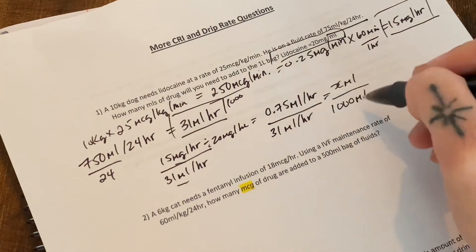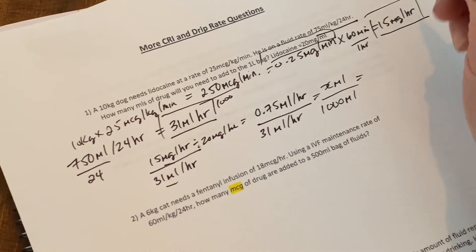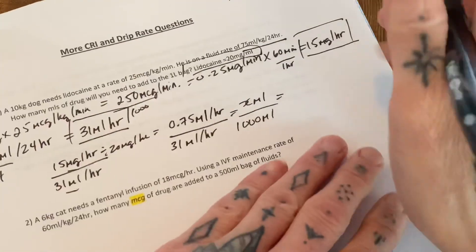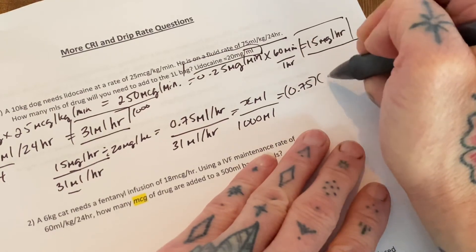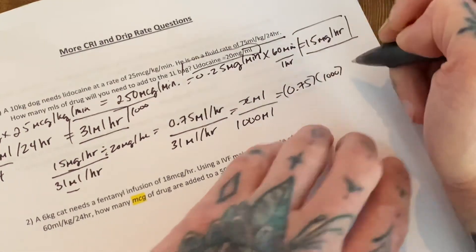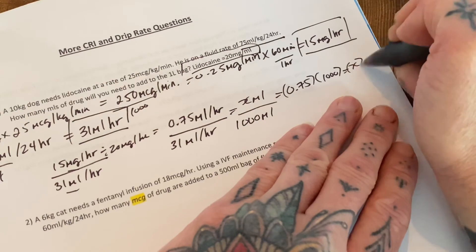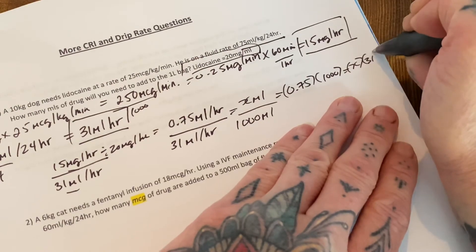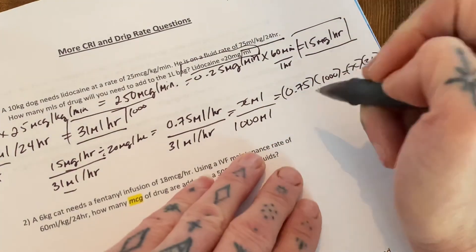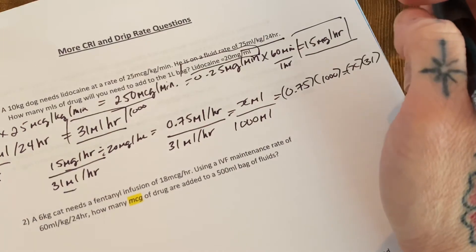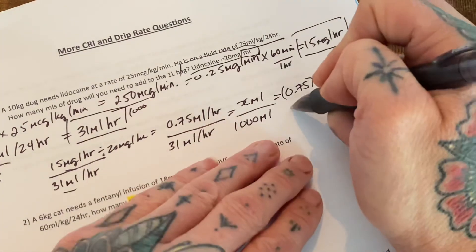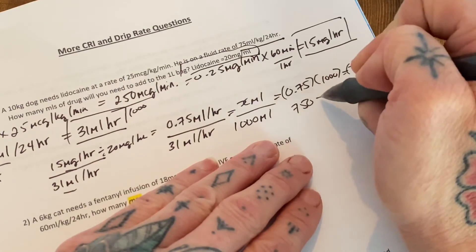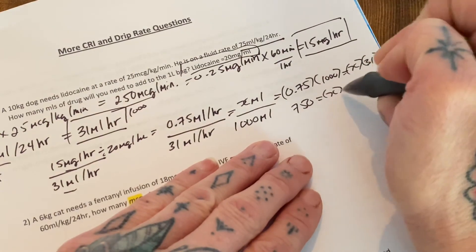So then this will equal 0.75 times a thousand equals X times 31. So 0.75 times a thousand is 750 equals X times 31.